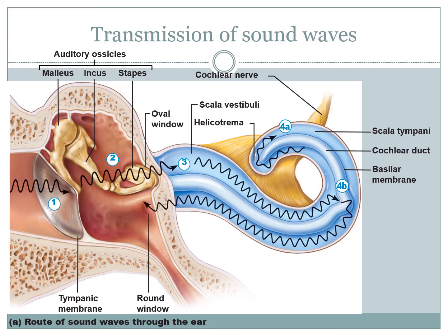Looking at hearing in more detail: sound is passed down from the pinna into your auditory canal. Going from a larger surface capture area into a smaller one amplifies the sound waves within the canal. From there it bounces onto the tympanic membrane, which — stabilized by a special skeletal muscle — bounces onto the malleus. The malleus vibrates the incus, and the incus vibrates the stapes. The vibration of the stapes passes on that mechanical vibration through what's known as the oval window.